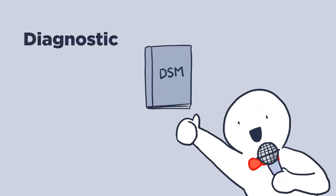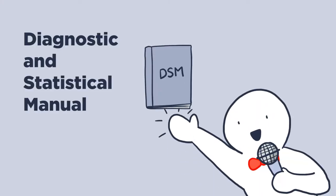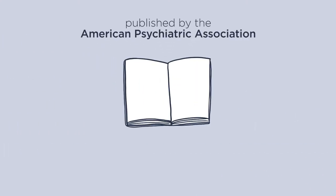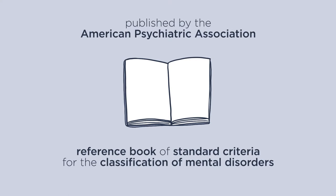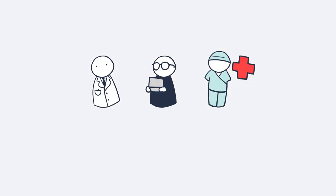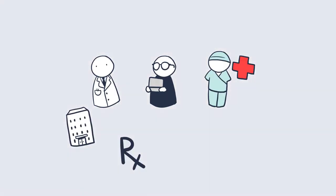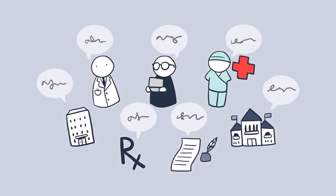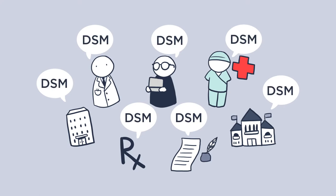The DSM is the Diagnostic and Statistical Manual of Mental Disorders. It's published by the American Psychiatric Association, and it is intended to be used as a reference book of standard criteria for the classification of mental disorders. Clinicians, researchers, healthcare providers, health insurance companies, pharmaceutical companies, policy makers, and even the legal system rely on the DSM as a resource. The DSM works to provide a common language about mental health issues that everyone can use.